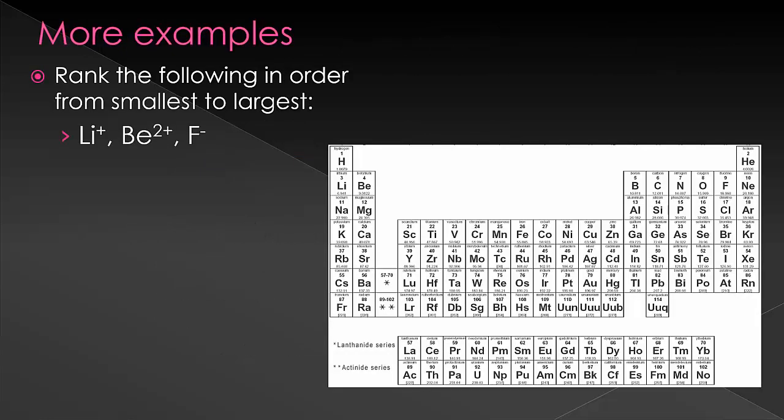Let's do some more examples. Rank the following in order from smallest to largest. So we have lithium plus, beryllium 2 plus, and fluorine minus. They're all on the same row, and therefore, they're all going to be relatively close to the same size, and so we can base this purely on charge. Beryllium will have our highest positive charge, making it smallest, while fluorine has our highest negative charge, making it the largest.